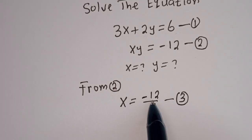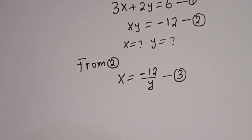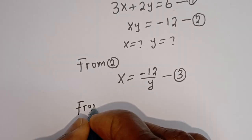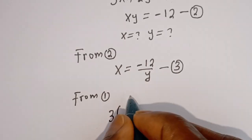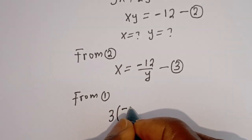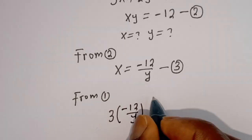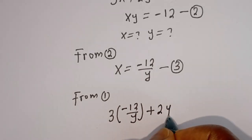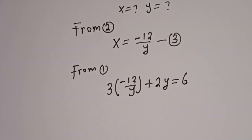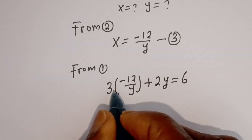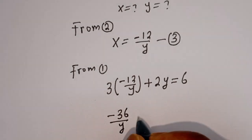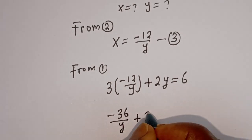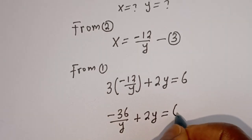Then we can now substitute equation 3 into equation 1. Anywhere you see x, we put this value. So from equation 1, we have 3 times bracket minus 12 divided by y, plus 2y is equal to 6. Then here we have 3 times minus 12, that is minus 36 divided by y, plus 2y is equal to 6.